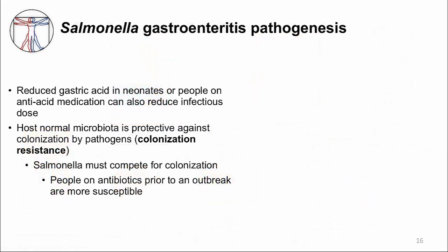Once Salmonella is in the stomach, acid can kill it, so people with reduced gastric acid — like neonates and those on antacid medications — are at higher risk of infection. Once Salmonella survives the stomach acid and travels to the distal gut, it must deal with the resident microbiota. Normal microbiota is protective against colonization by pathogens like Salmonella — a concept called colonization resistance.